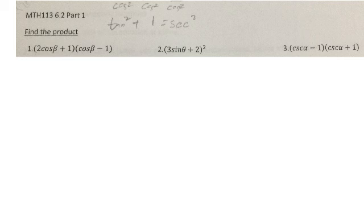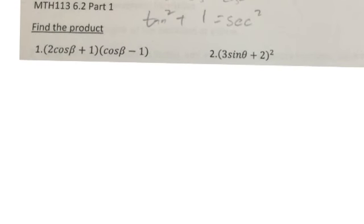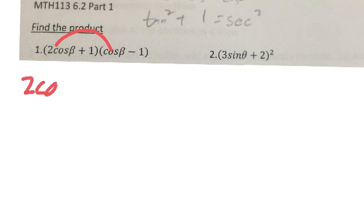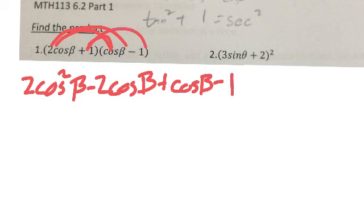So, we've got first 2 cosine beta plus 1 times cosine beta minus 1. So I have to distribute that. 2 cosine beta times cosine beta, that's 2 cosine squared of beta. 2 cosine beta times negative 1 will be negative 2 cosine beta. Cosine of beta times 1 is going to be positive cosine beta. And then 1 times negative 1 gives negative 1.